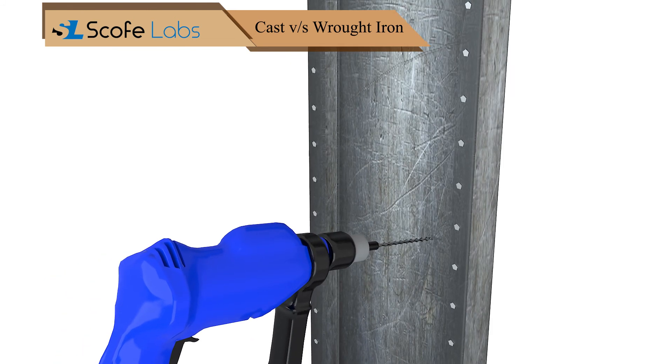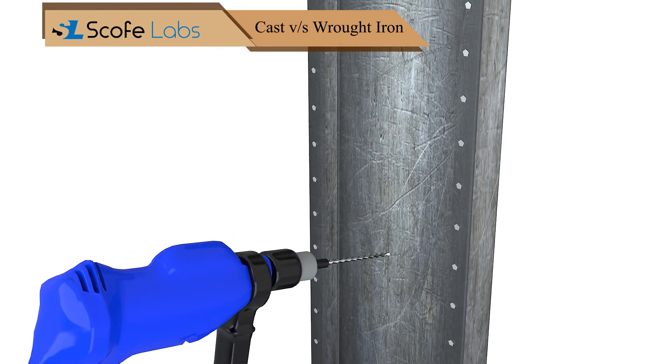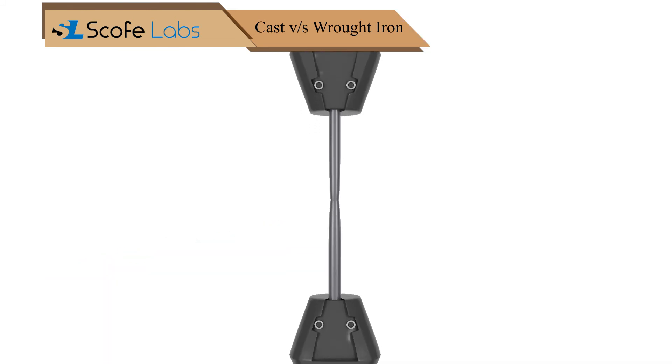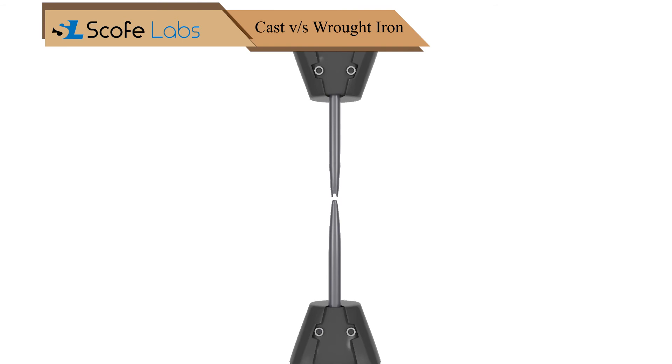Cast products are more hard and brittle, whereas wrought products are ductile and possess high strength.